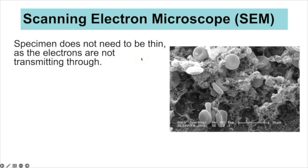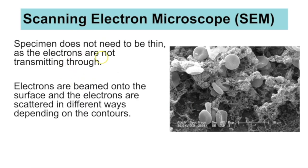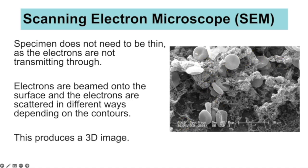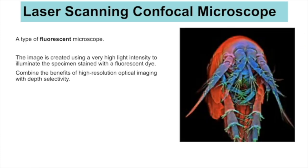In scanning electron microscopes (SEM), the specimen does not have to be thin because electrons don't pass through it. Instead, the electrons are beamed onto the surface and scatter in different ways depending on the contours of the specimen, reflecting backwards. In this way you get a 3D image.